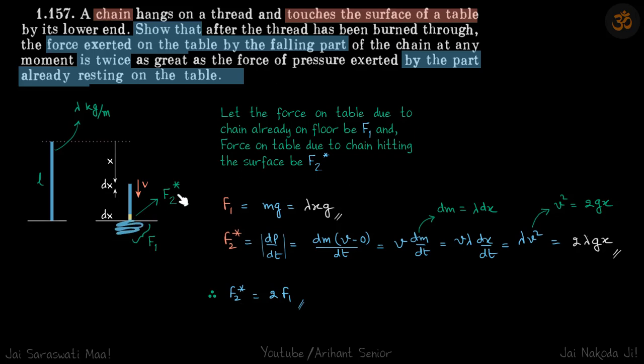That change in momentum of this small part will exert a force on the table. So let's call that f2 star, and the force exerted by the chain which is already on the table, let's call that f1. We need to find the relation between f2 star and f1.